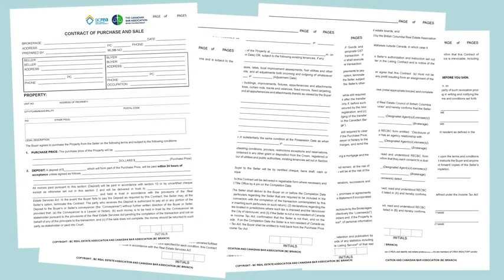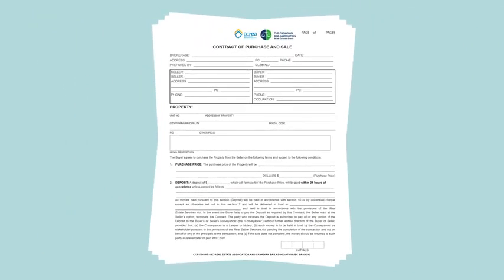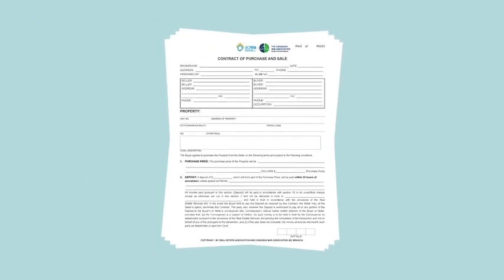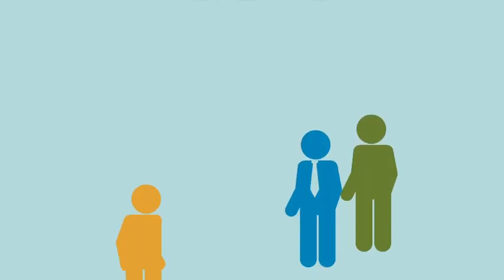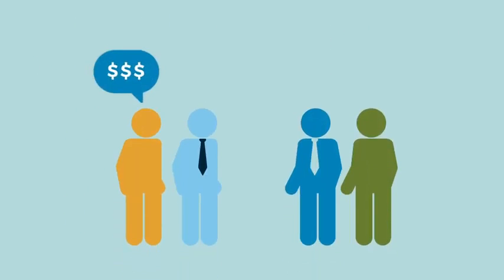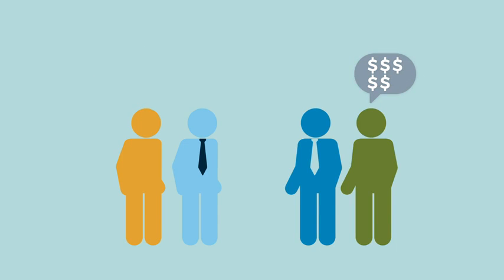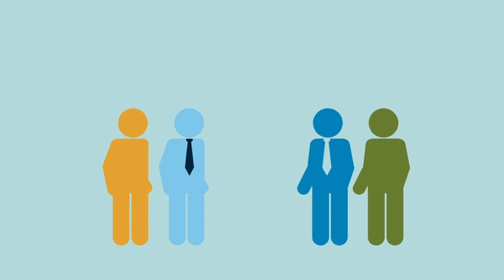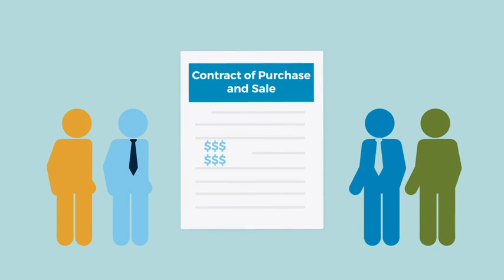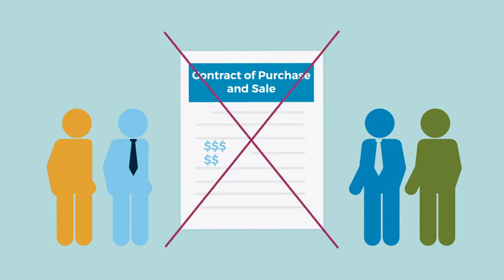Purchase Price: The purchase price is the final price that both the buyer and seller agree on when the offer is accepted — this is the amount the buyer is willing to pay for the property. During negotiations, the price may change as counter offers are exchanged. Typically, these changes are shown on the Contract of Purchase and Sale by marking up the document, with the buyer and seller initialing to show their agreement. This process continues until the parties agree on the final purchase price, or the offer expires or is withdrawn.